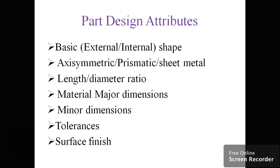The components used for design attributes include: basic external or internal shape, axisymmetric, prismatic, or sheet metal components, length to diameter ratio, material, major dimensions, minor dimensions, tolerances, and surface finish.